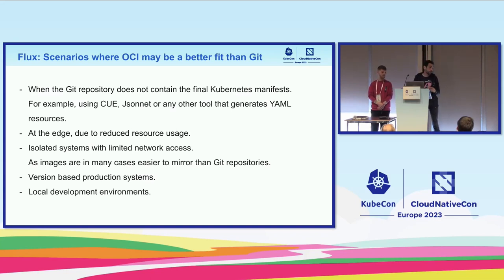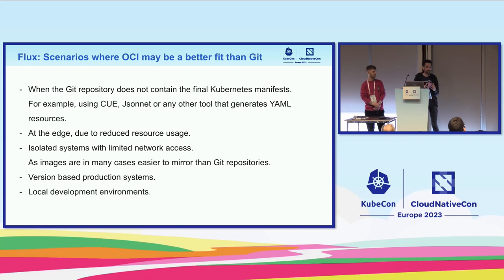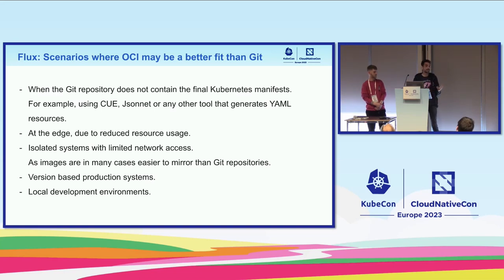Another use case is local development environments. If you're using Git and you want to test something on your local cluster, you have to push the change to Git, then your local cluster has to synchronize the change. With OCI, you can run a container registry locally in Docker — it's just a container, the CNCF distribution. Instead of going through Git, all your local changes can be pushed there in under one millisecond, and Flux can synchronize locally. You don't have to go through Git to test things on your local machine.